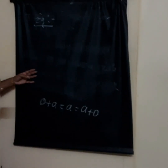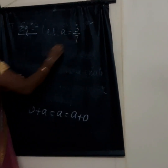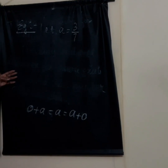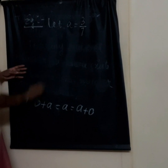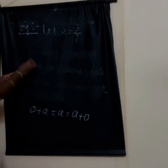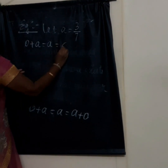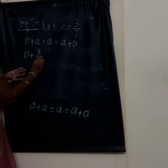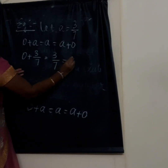Let's see an example. Suppose A is equal to 3 by 7. We substitute here: 0 plus A gives us 0 plus 3 by 7, which is nothing but 3 by 7. That is equal to A.